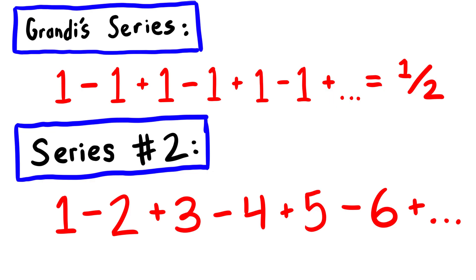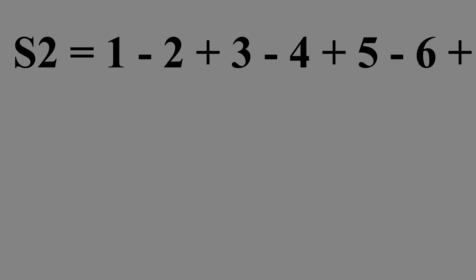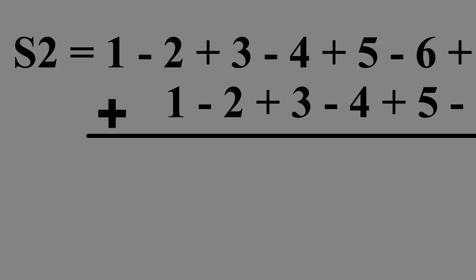Anyways, with the sum of Grandi series, we can use it to find the sum of this next series, which we'll just call series number 2, or S2 for short. Let's take S2 and then add it to itself. If we offset the bottom S2 to the left by one space, then we get a very convenient sum.